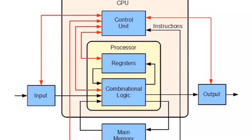High-level language is converted to low-level language, similar to translating English into Tamil. We use a compiler for this. The compiler translates high-level language into low-level language. That low-level language is machine language, specifically MIPS assembly language.